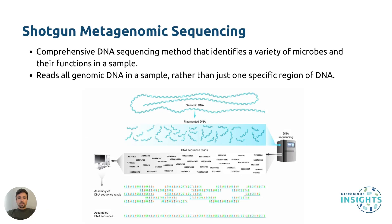So what is shotgun metagenomic sequencing? Shotgun metagenomic sequencing is a powerful technique that reads all genomic DNA in a sample. This is different to amplicon sequencing, such as 16S or 18S ribosomal RNA sequencing, which only sequences one gene region in a sample, and therefore is limited in the types of microbes that can be measured.